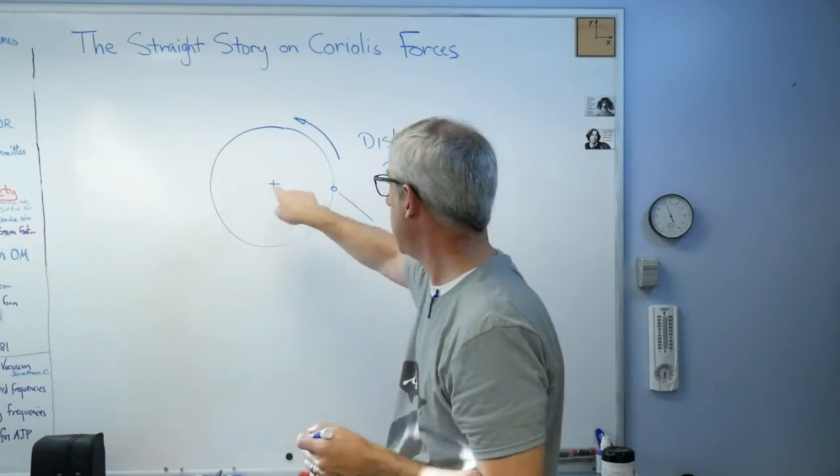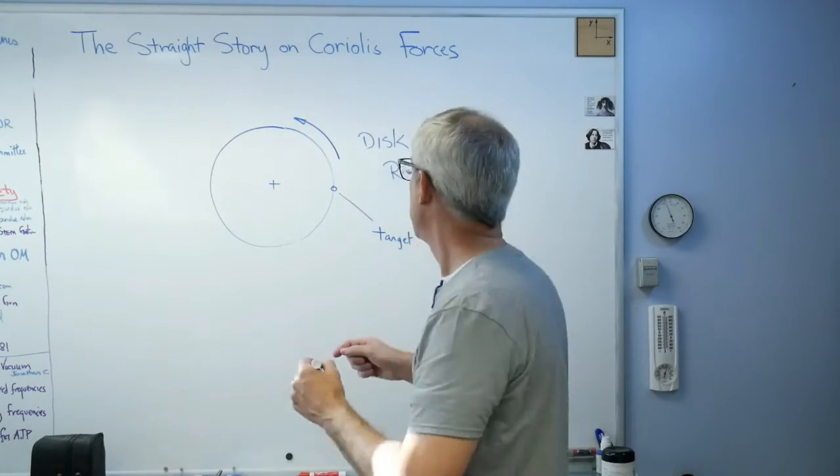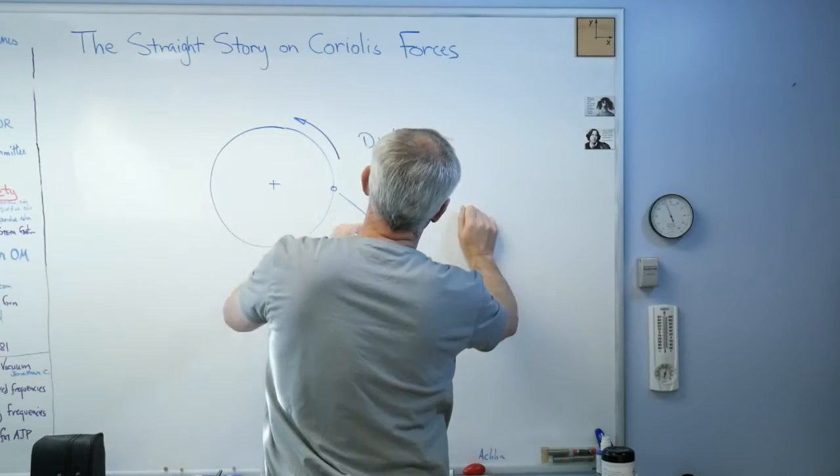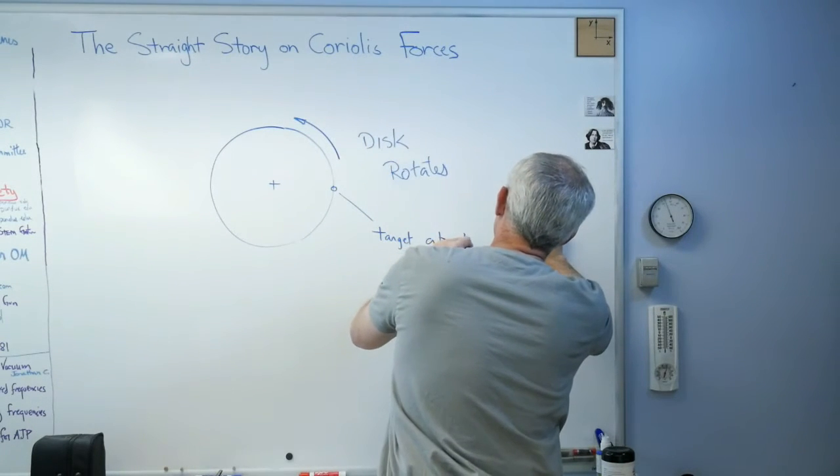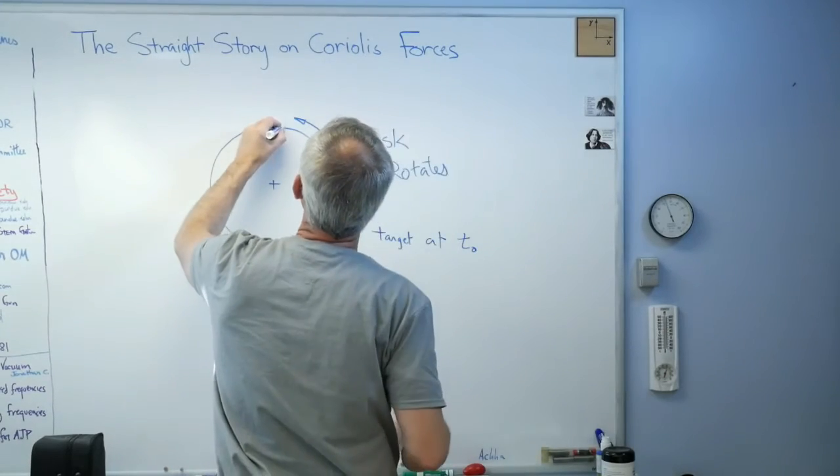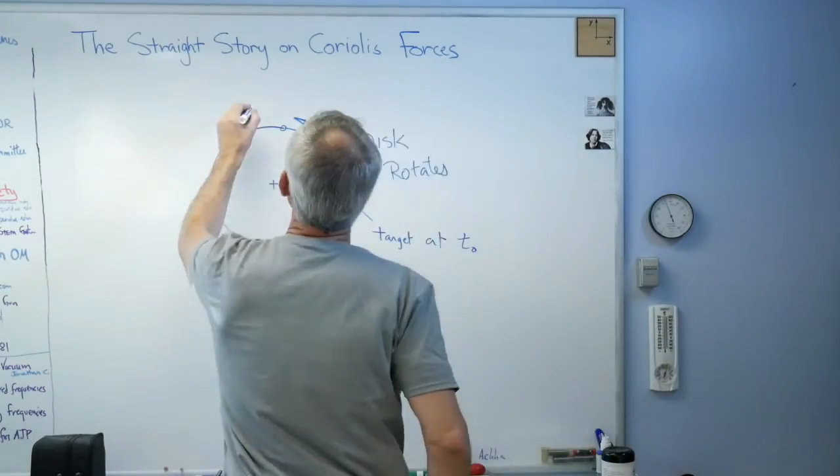So if you want to hit the target, you don't shoot for where it is, you shoot for where it's going to be when the ball gets there. So that's the target at t=0, and let's say this thing is really turning quickly. There's the target at t impact.